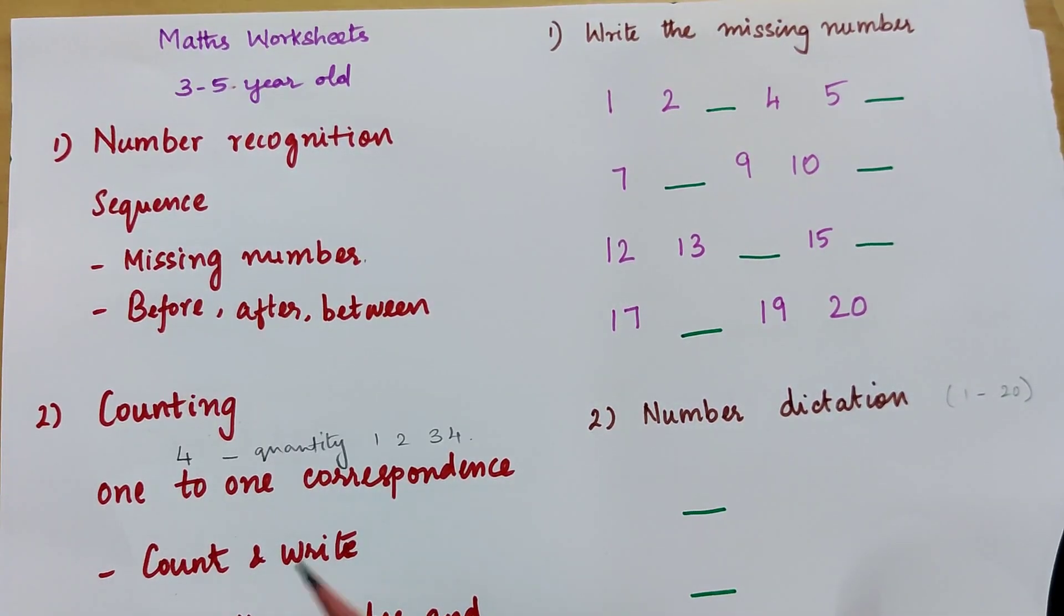Counting we have to teach them 1 to 1 correspondence, that is a number indicates that many number of objects. That is when we say 4, there are 4 number of objects.